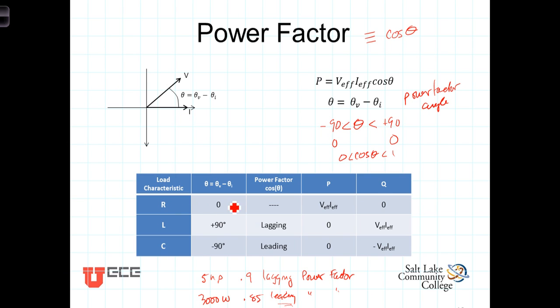In a resistor, just as a review, because the angle is 0, the cosine of theta is 1, and the power in the resistor is V effective I effective. The reactive power Q, which is dependent upon the sine of theta, is 0.